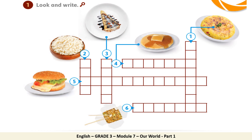Look at picture number one. Can you tell me which food is this? Correct — it's an omelet. Number two — which food is this? Can you tell me? Excellent — it's rice. Now let's look at number three. Can you tell me which food is it? Fantastic — it's a crepe.